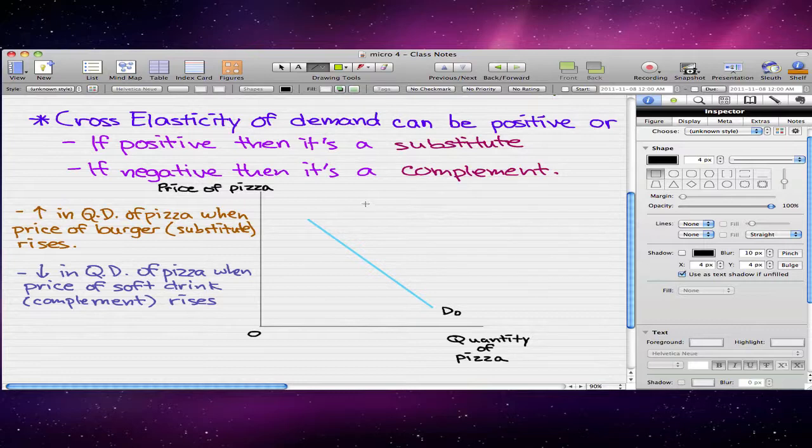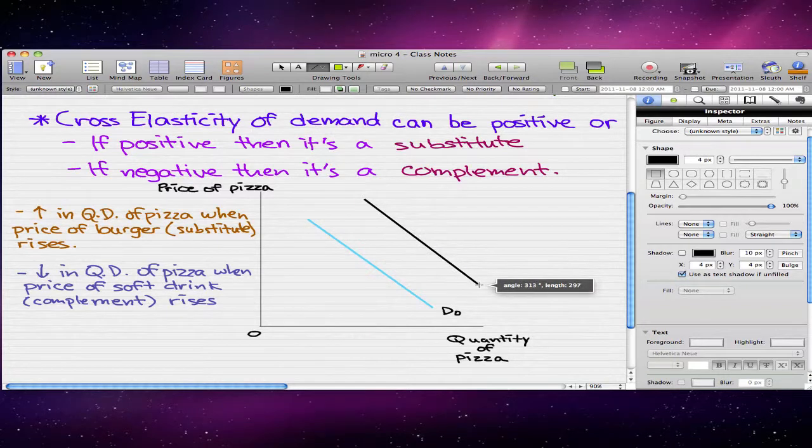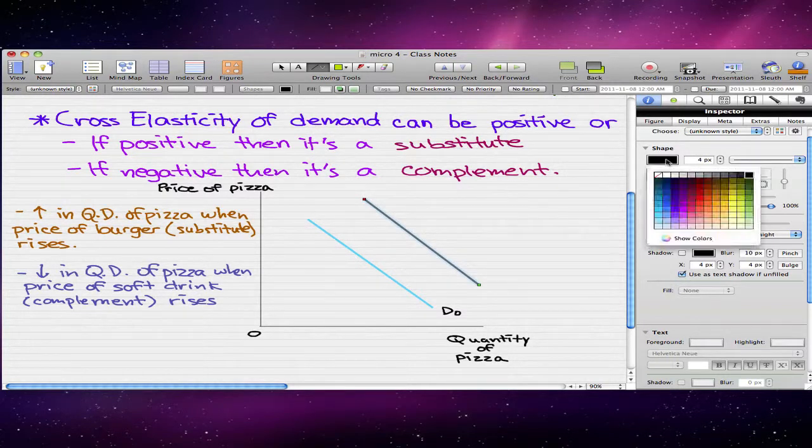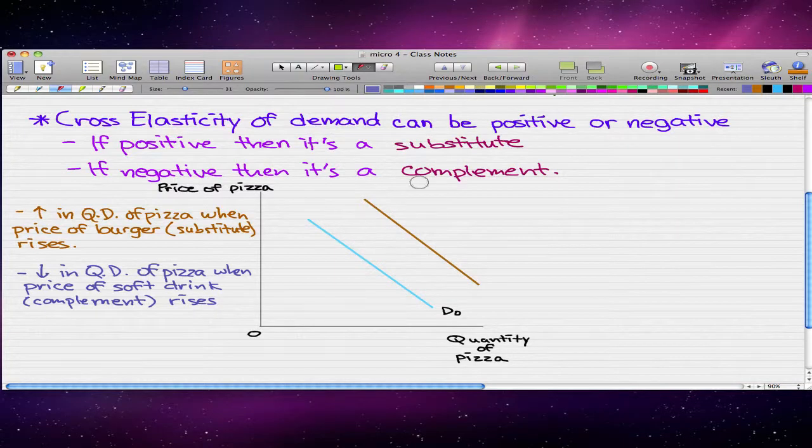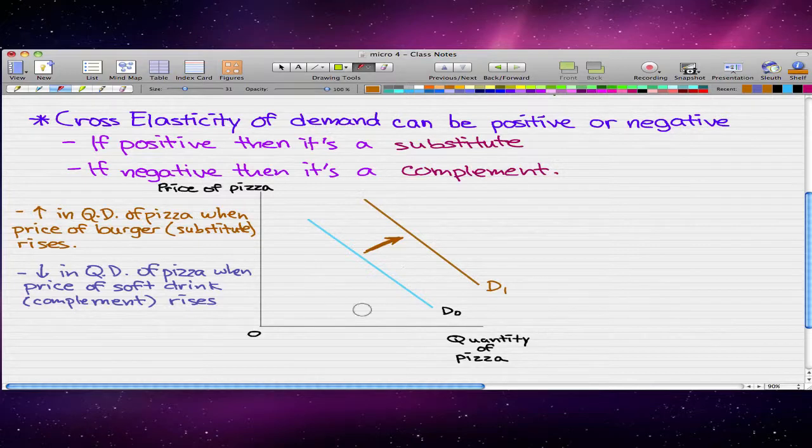So, then in this graph, which is a graph of the quantity of pizza versus the price of pizza, it will change to like this. The quantity demanded of pizza will rise, so then the demand curve will pretty much shift to the right, and we will have our new D1 demand curve.